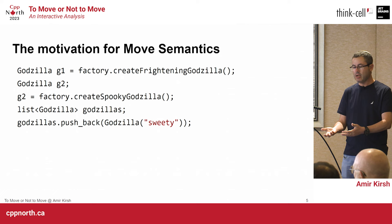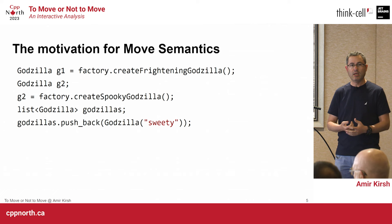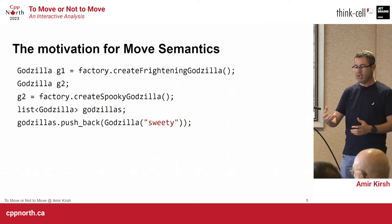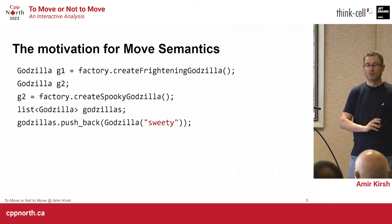G2 is created, then we assign another spooky Godzilla into G2. Again before C++11, without optimization there is a copy through assignment. Then we add a Godzilla to a list. In the standard library, when you add something into a container, the thing you send is being copied. So when I create a temporary Godzilla — the sweetie Godzilla — without optimization it is being copied into the container.